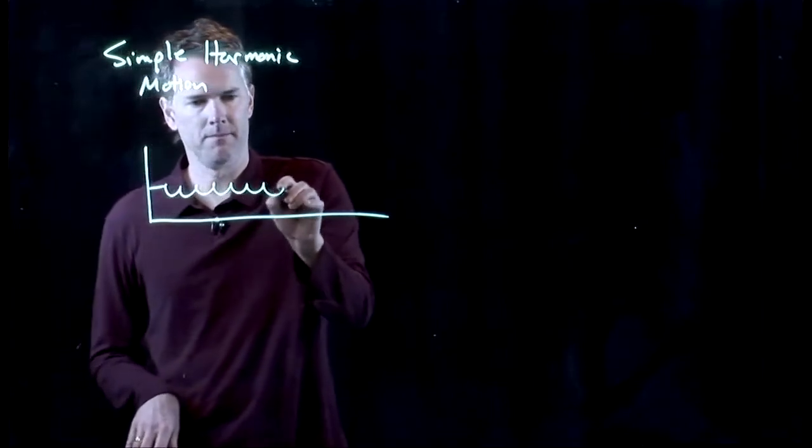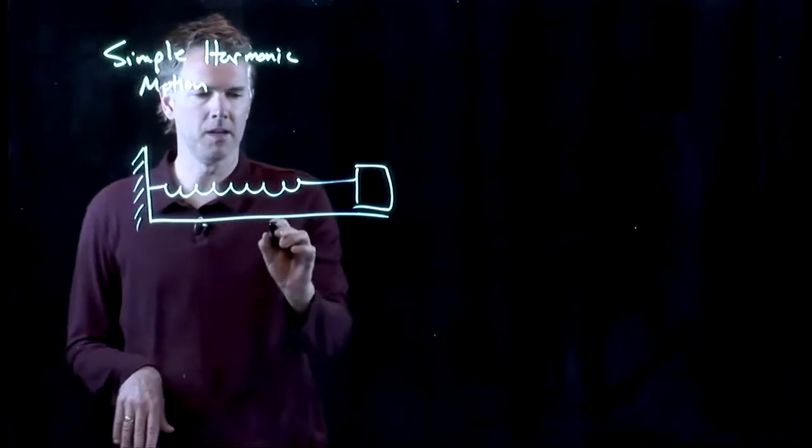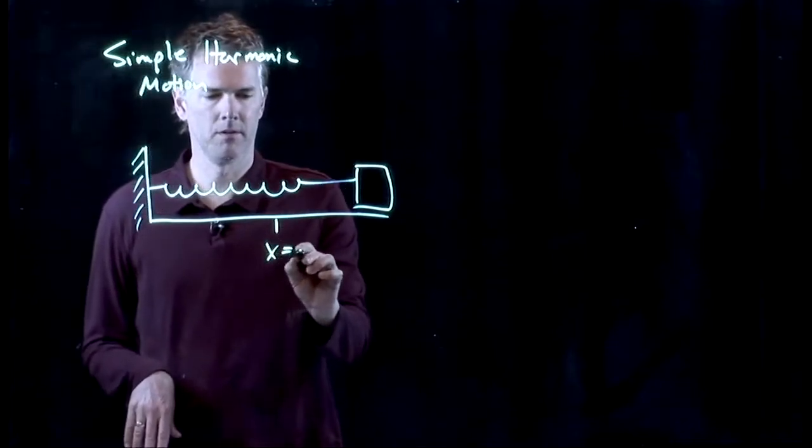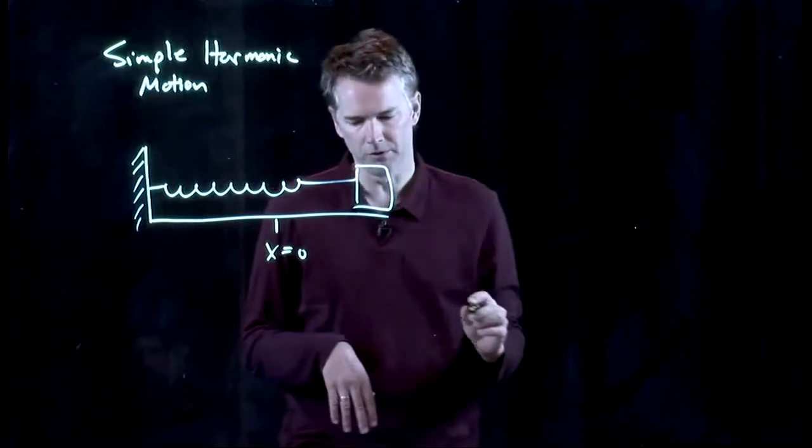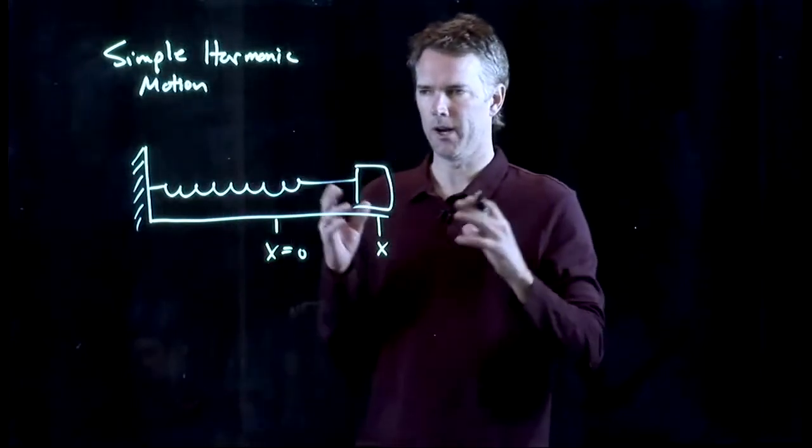Let's take a spring and let's tie it to the wall and let's stretch it out from its equilibrium position. So it was sitting there at x equals zero. We're going to stretch it out to some distance x and then we're going to let it go.